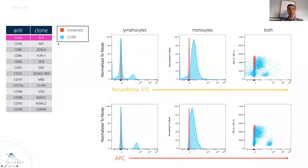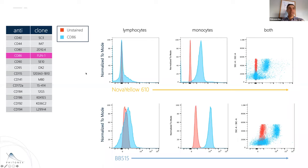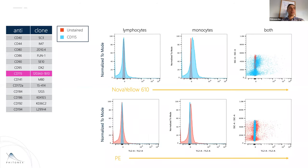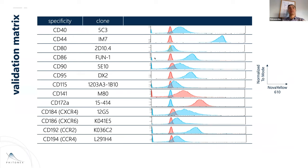Examples from our validation matrix: CD40 clone 5C3 — we characterize staining on lymphocytes versus APC and monocytes, benchmarking against commercially available antibodies. The same story applies for CD44, CD86, CD115, and CD141, all benchmarked against commercially available antibodies. Now that we have all these specificities, we have the ability to print them on any color, and we can also take in any antibody from any customer and do exactly the same thing.